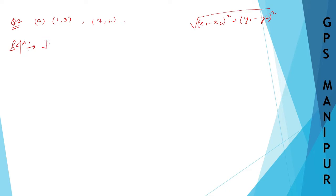Here x1 is this number and this is y1. So x1 is 1, y1 is 3, x2 is 7, and y2 is 2.